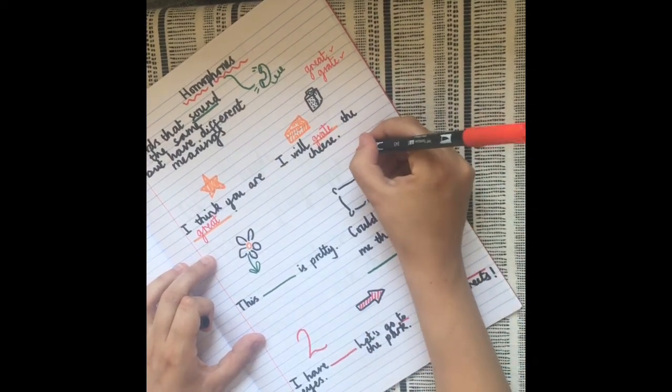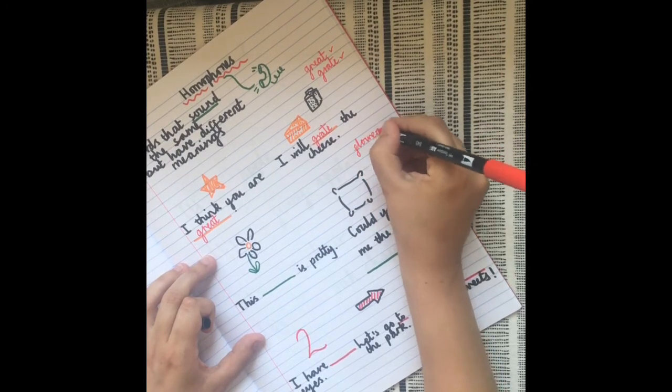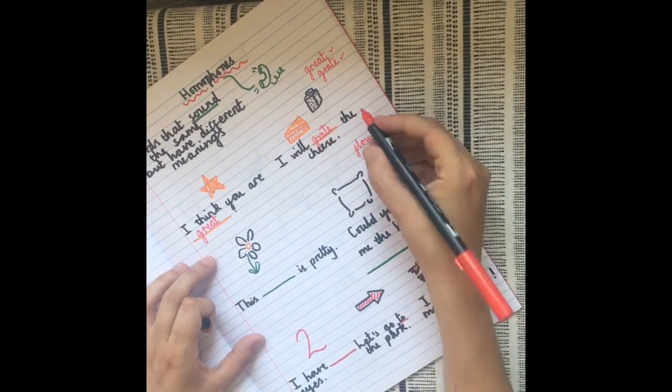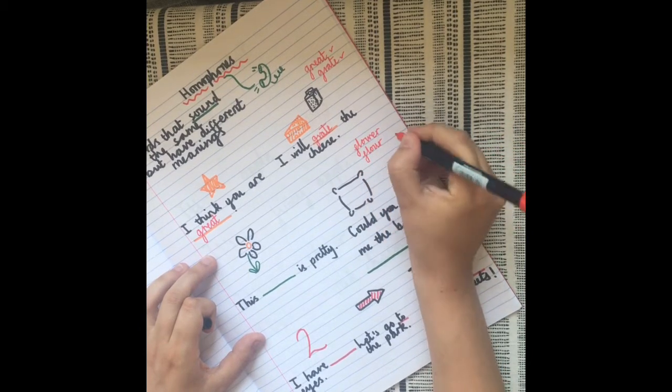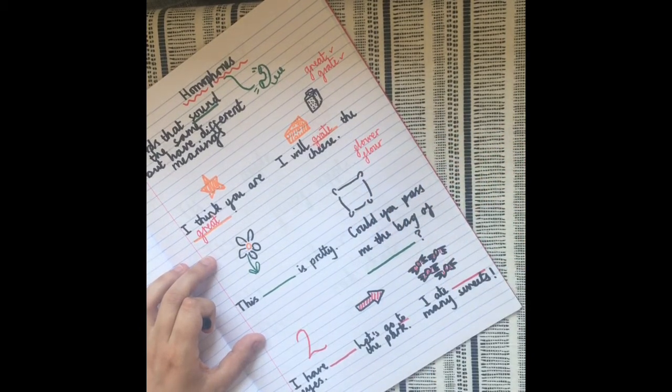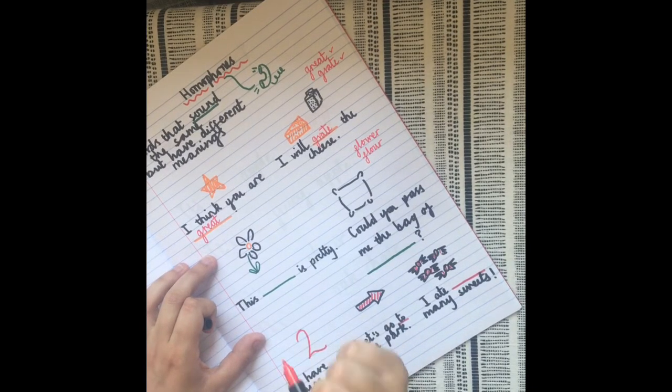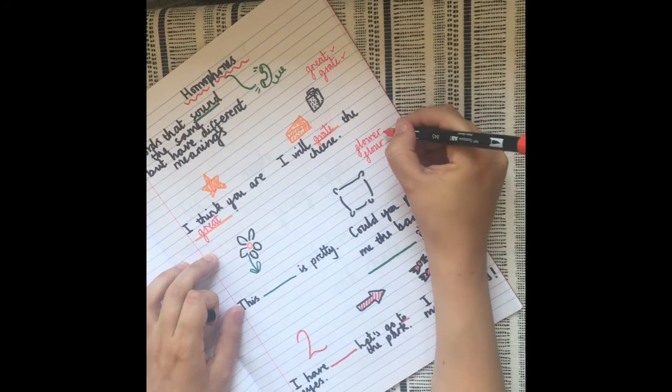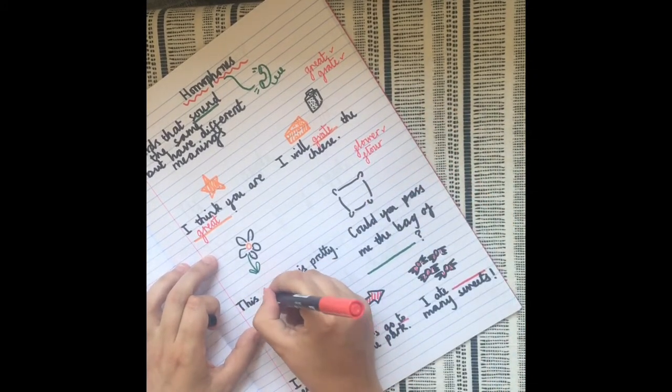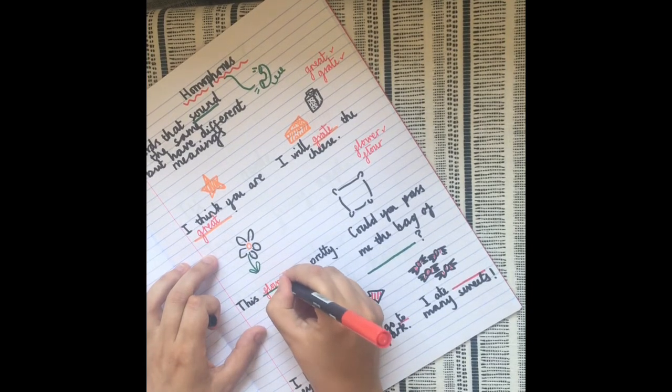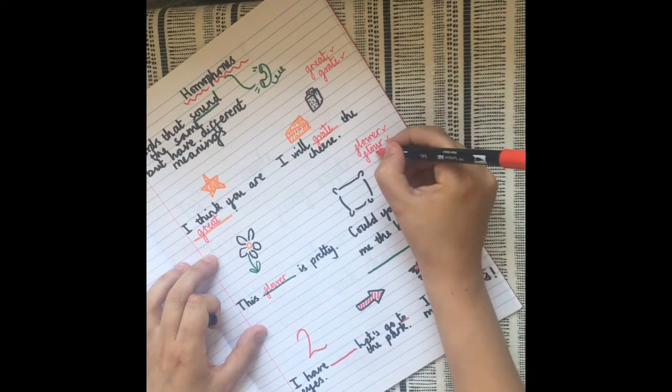So we have two ways of spelling flour: F-L-O-W-E-R or F-L-O-U-R. Have a quick think which one do you think is correct. Okay, we should have had 'This flower'—it's that L sound. And 'Could you pass me the bag of flour?'